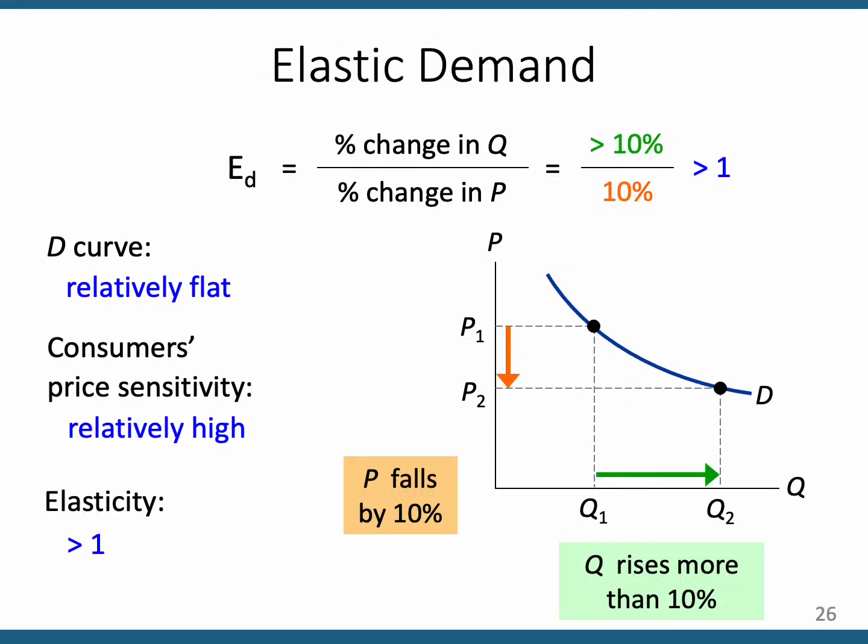This is a flatter-looking demand curve. Because of the slope, if the price decreases — not quite 50% — look how much the quantity changes. That's an overreaction on the part of buyers. When there's an overreaction, that's elastic demand. So the flatter the curve looks, the more elastic the demand is for that product.